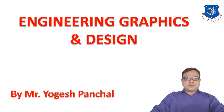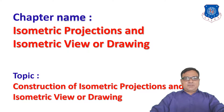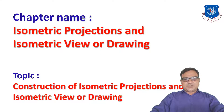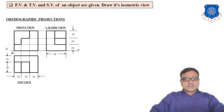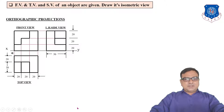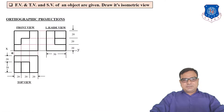Hello everyone, welcome to the subject of engineering graphics and design. We are learning isometric projections and isometric drawing. Today we will construct the isometric projections and isometric view of given orthographic projections. Our first example: the front view, top view and side view of an object are given. Draw its isometric view. These orthographic projections are in first angle projection method. Our aim is to draw the 3D drawing, i.e., the isometric view.